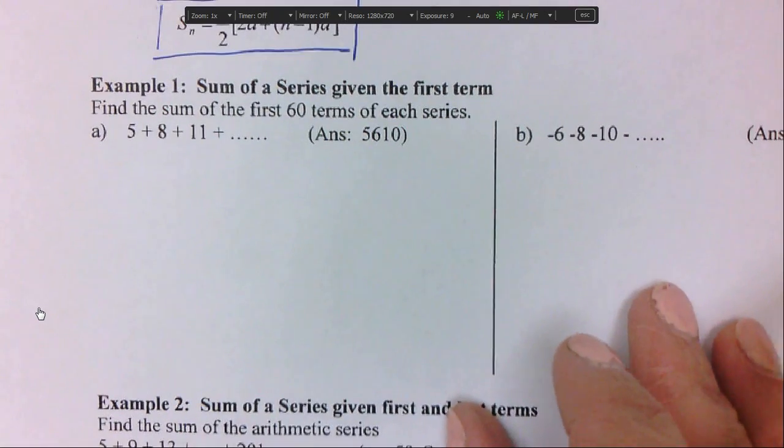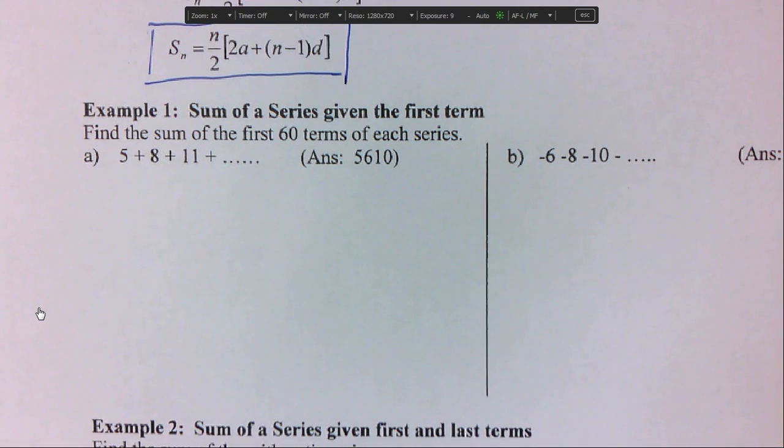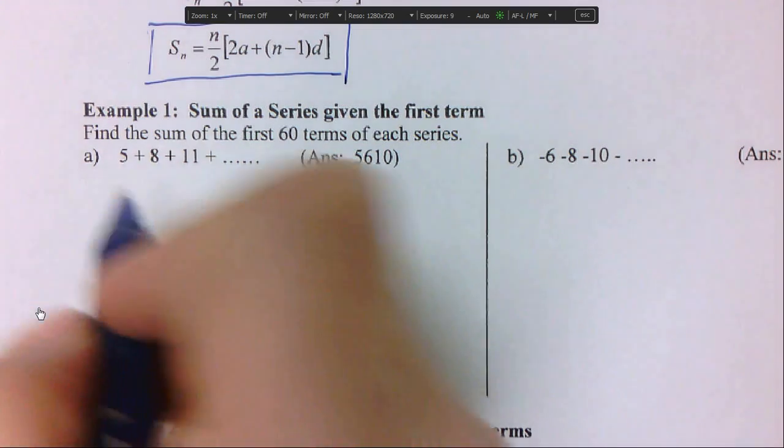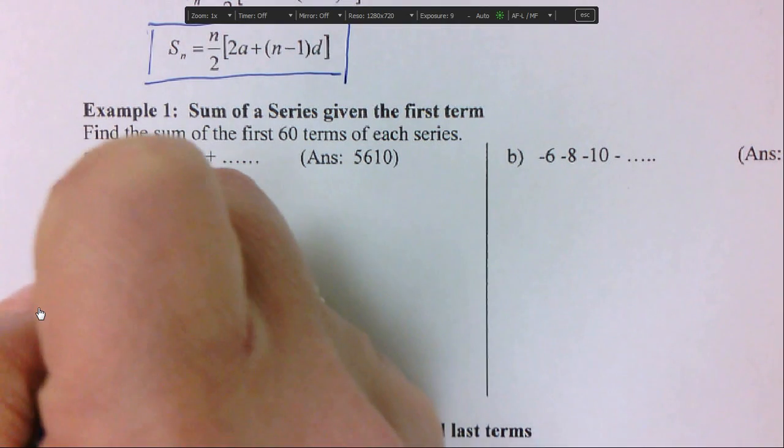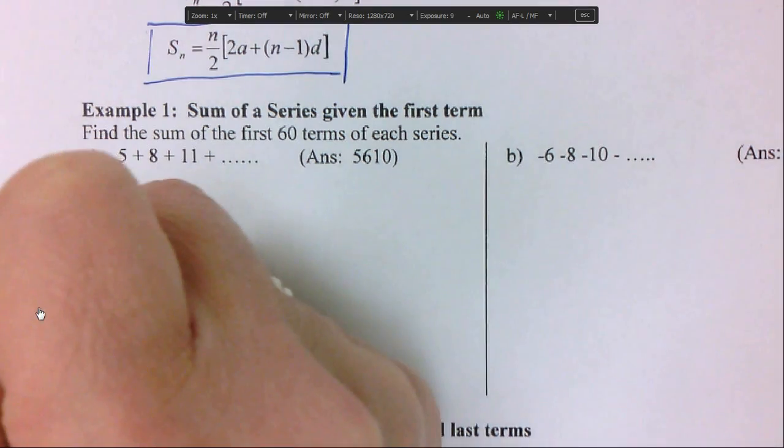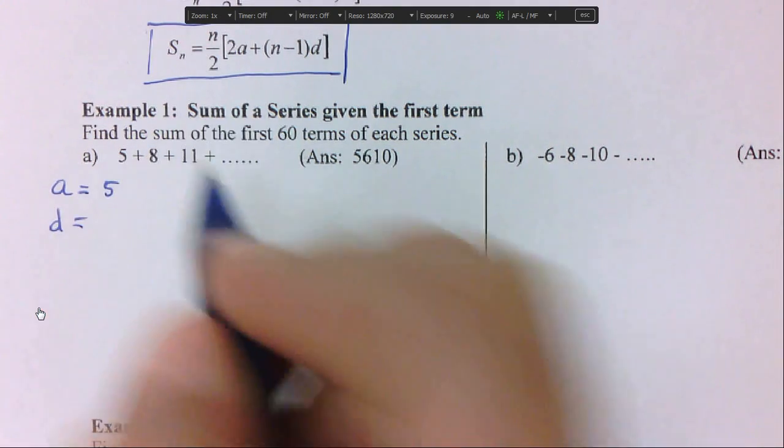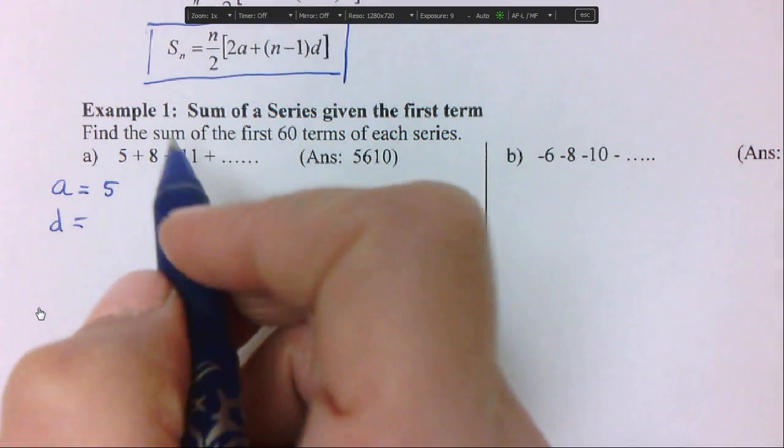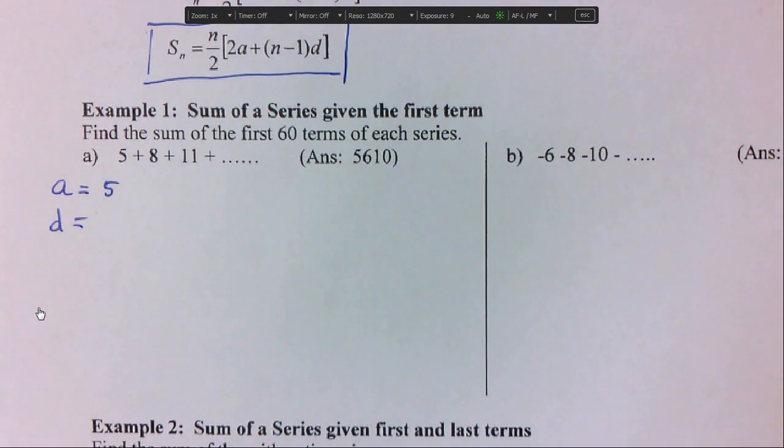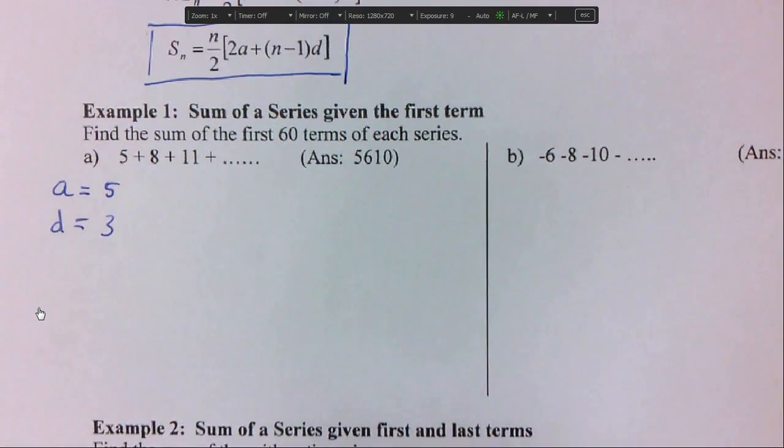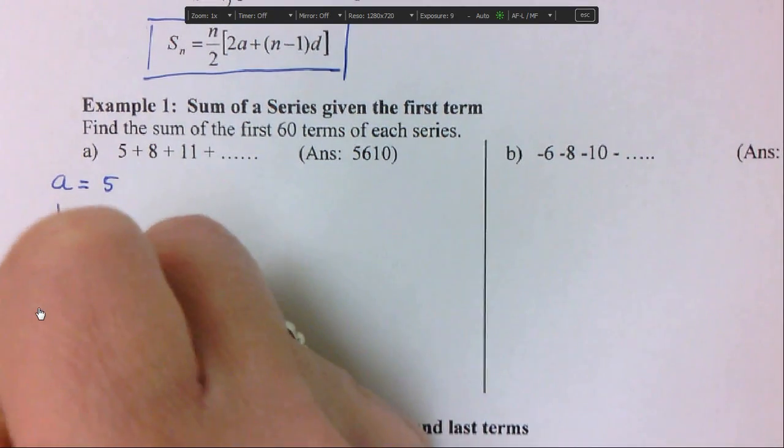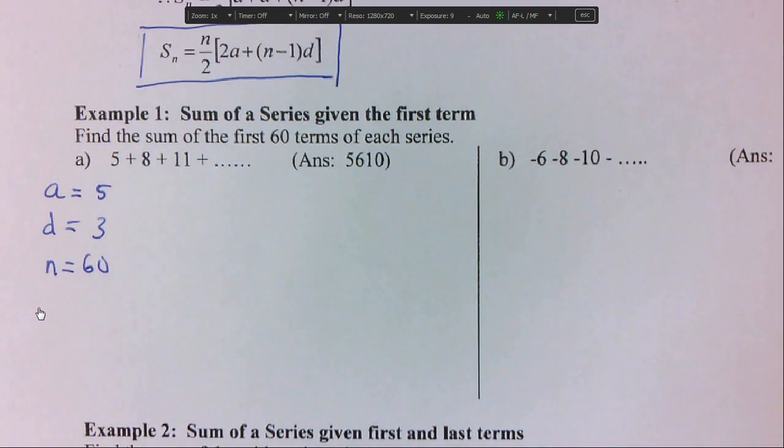So let's do example one, the sum of a series given the first term. It's asking us to add up the first 60 terms. So what do we know? We know that a is 5. To get the d, just subtract the terms. So 8 minus 5 is 3. Just check that 11 minus 8 is also 3. And it is. And then n is the number of terms we want to add, so 60.